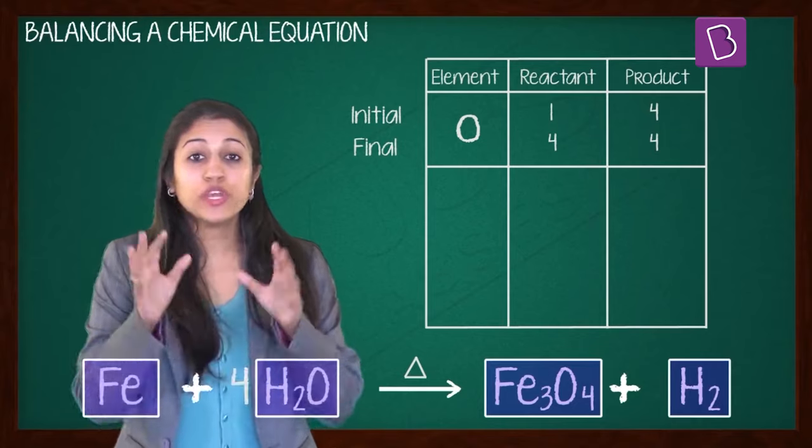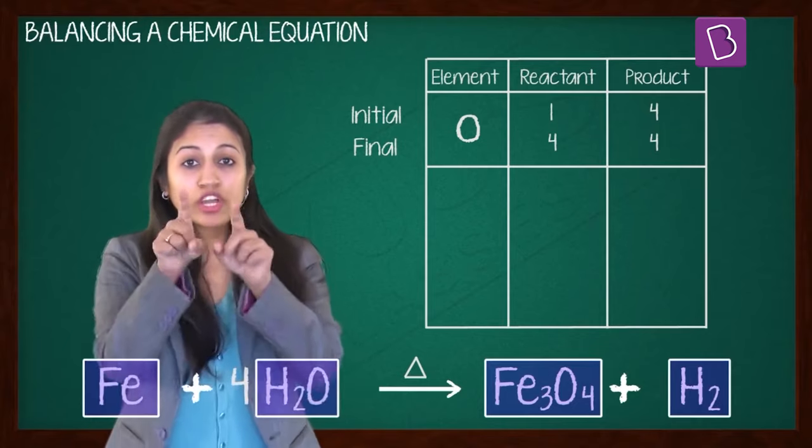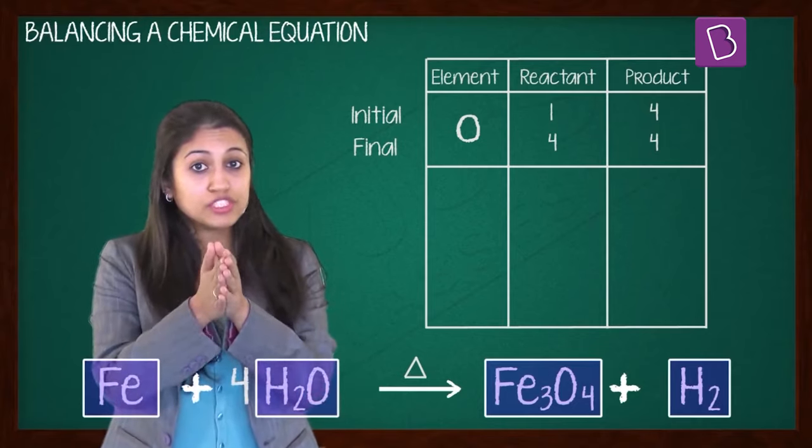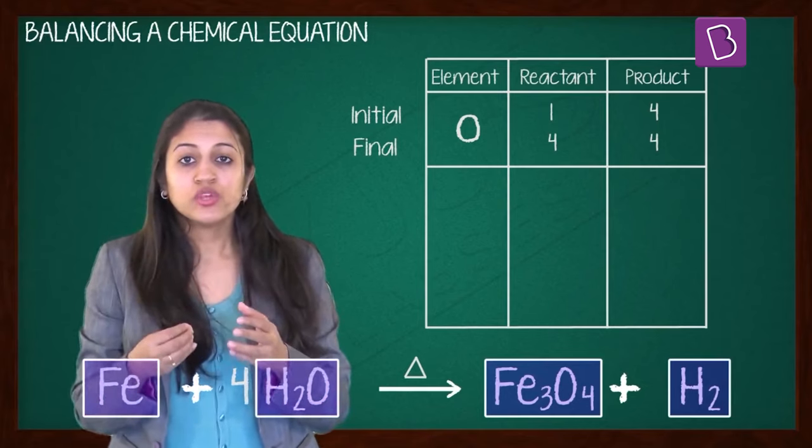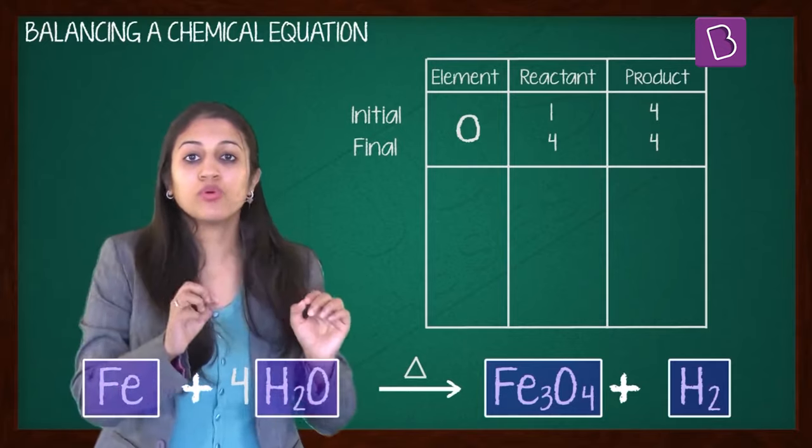There's one more thing you need to remember here. To equalize the number of atoms, you cannot alter the formula of the compounds or elements involved in the reactions. For example, to balance oxygen, you can put a coefficient as 4, as 4H2O. But you cannot do it as H2O4 or H2O and then 4.